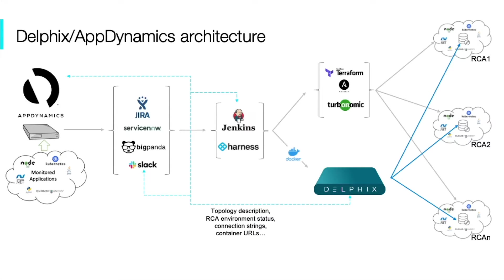During the creation of the root cause analysis environments, Delphix will ask AppDynamics about the topology of the application that is having problems, to find out what data sources should be provisioned. Delphix will also communicate with Jira and AppDynamics to let them know when the root cause analysis environments have been created and how to connect to them.